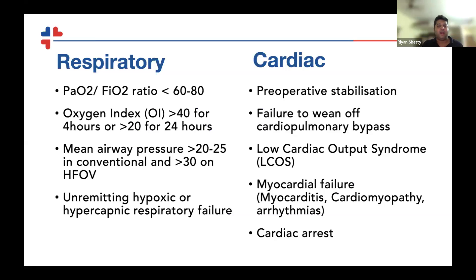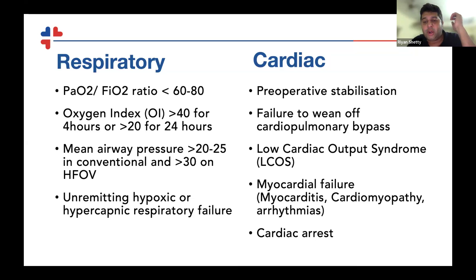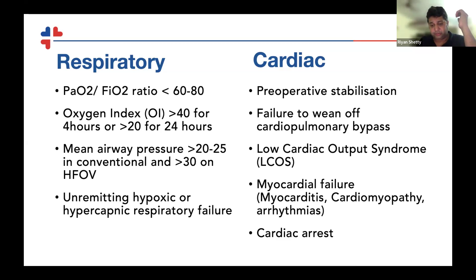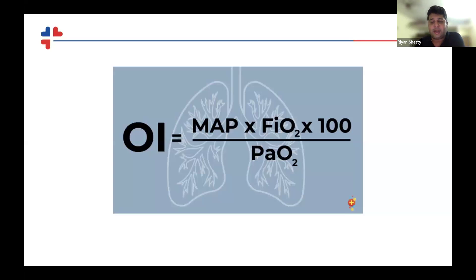Coming to pediatrics: the respiratory indications are almost the same as adults, but pediatrics uses the oxygen index rather than the PaO2/FiO2 ratio. In cardiac pediatric ECMO, indications include pre-operative stabilization of TAPVCs and arterial switch operations, failure to wean from cardiopulmonary bypass, low cardiac output syndrome, medical cardiac failure such as myocarditis and cardiomyopathy, intractable arrhythmias, and in-hospital cardiac arrest. Oxygen index is calculated as MAP times FiO2 times 100 divided by PaO2; when it's more than 40 for 4 hours, or more than 20 for 24 hours, it raises significant alarm.